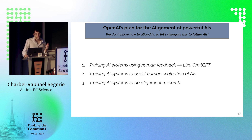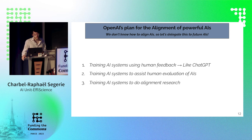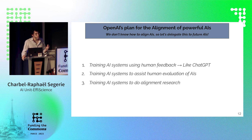What is OpenAI's plan for alignment of powerful AIs? There are three steps: first, training AI systems using human feedback — the same techniques used for ChatGPT, which we know are quite unreliable on superficials. Second, training AI systems to assist human evaluation of AIs. And finally, training AI systems to do alignment research. If I summarize this plan: we don't know how to align AIs, so we will be delegating this research to future AIs.